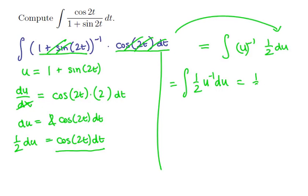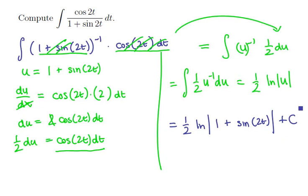If we continue where we were last time, we saw that the anti-derivative was 1 half ln of the absolute value of u. If we make our back substitution, we get 1 half ln of the absolute value of 1 plus the sine of 2t. This gives us one of our anti-derivatives, and adding plus c gives us all of our anti-derivatives. And we're done.